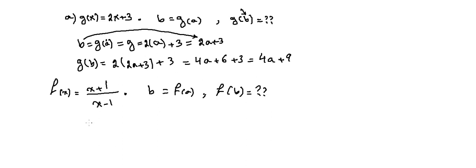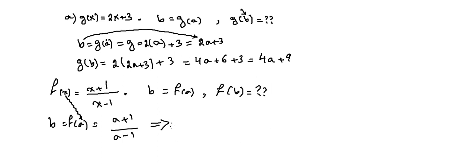B is given as F of A, which equals (A plus 1) over (A minus 1), because F of X is (X plus 1) over (X minus 1), and instead of X we substitute A. So B equals (A plus 1) over (A minus 1). This is F of A, which is B.